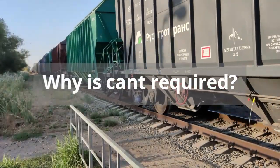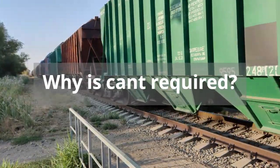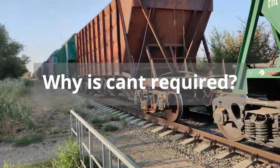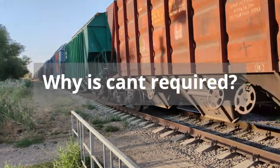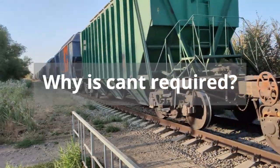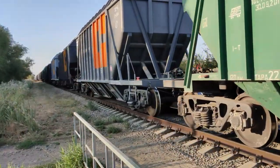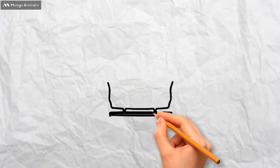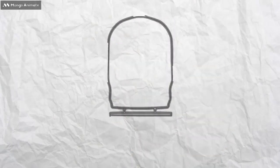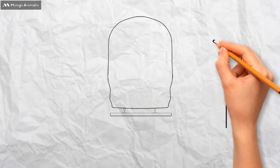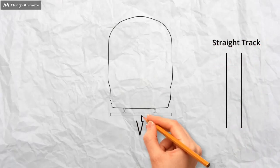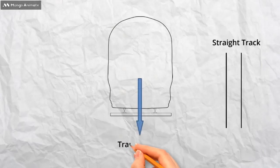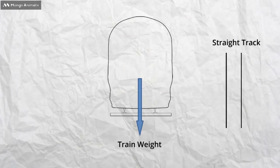So now we know what cant is, but why is it needed? To understand why cant is applied to curves on the railway, first we need to understand the forces that are acting on the trains. Here we have a train on the tracks. When a train is on straight flat track, its weight acts vertically down. There is no lateral, or sideways, force acting on the train, its passengers, or the rails.